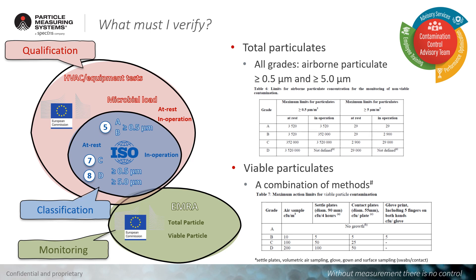Nothing new regarding the way we must monitor. For total particle, we must measure the airborne particulate concentration of both dimensions — 0.5 micron and 5.0 micron — for all grades. Regarding microbial monitoring, the new draft confirmed what we have seen in previous drafts: a combination of settle plates, volumetric air sampling, gloves, gowns, and surface sampling with swabs and/or contact plates.